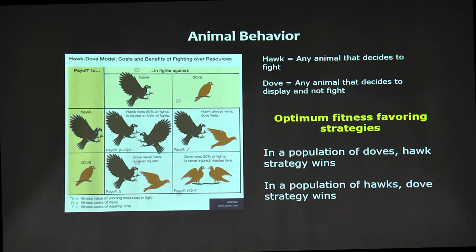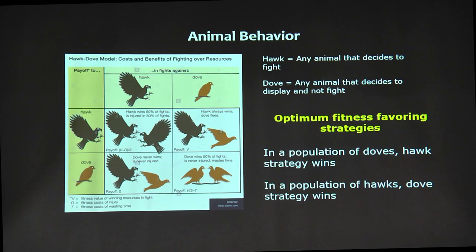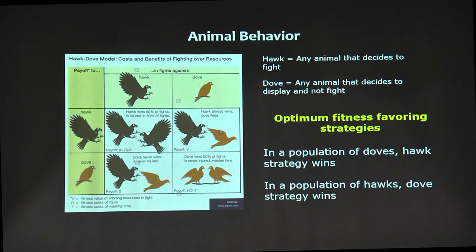When two doves interact with each other, they are just wasting time — they show aggression but after some time simply share the resources in half. So how does this help decide the optimum fitness-favoring strategy? In a population where there are more doves, the hawk strategy wins. Equating this to a room full of people: if there are many aggressors, we are going to fight a lot and maybe not find what we needed. However, in a population of hawks, the dove strategy wins — if we all cooperated, we could sit and distribute whatever we are looking for — food, territory — divide it in half and nobody gets injured.